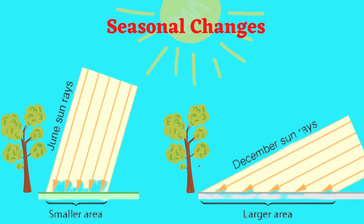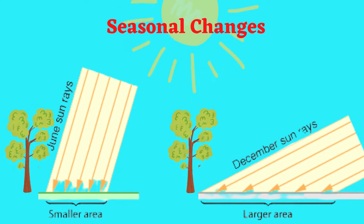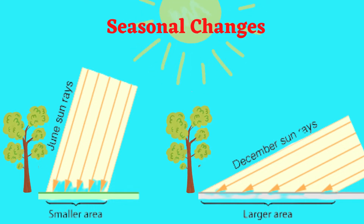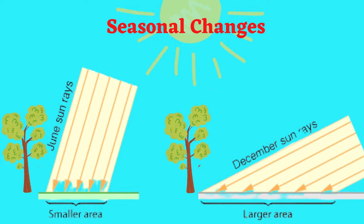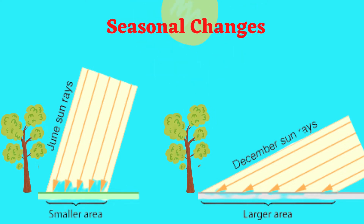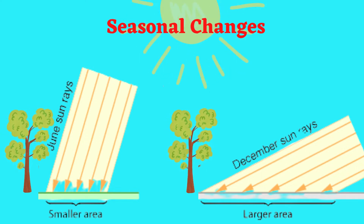Another factor is seasonal changes. The earth revolves around the sun while tilted on its axis. Thus, the overhead sun appears to migrate from the Tropic of Cancer in June to the Tropic of Capricorn in December.